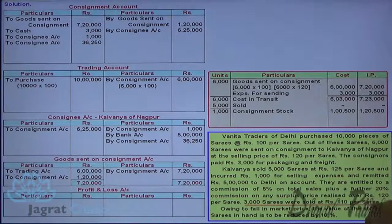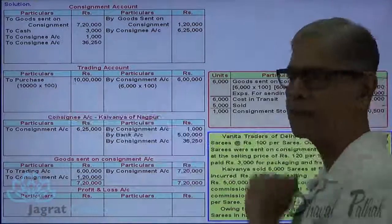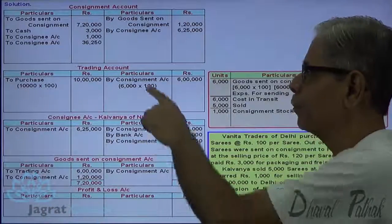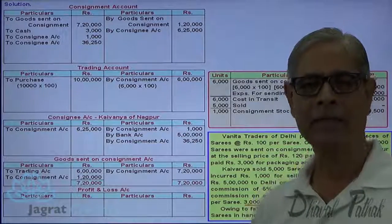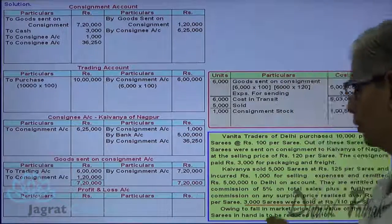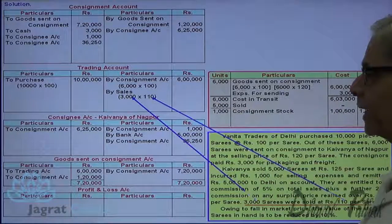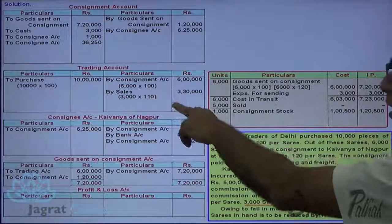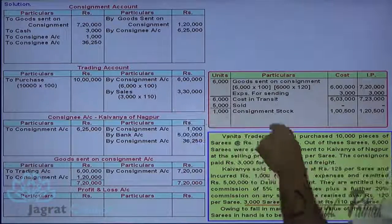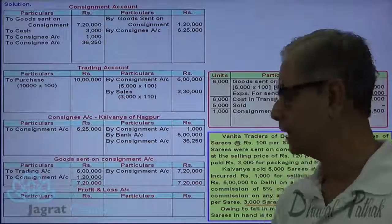3,000 sarees were sold by the consignor himself. He purchased 10,000 sarees, gave 6,000 for consignment activity, and sold 3,000 sarees at ₹110. That is the sales credited to the trading account — ₹3,30,000 is the sales that occurred at Delhi. This is the consignor's own sale.